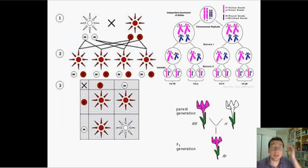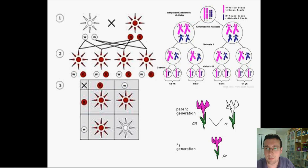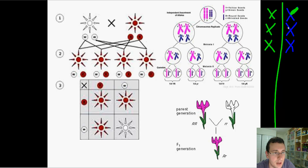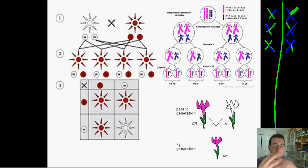Why does independent assortment happen? During meiosis, homologous chromosomes separate during anaphase 1. You have 23 different pairs of chromosomes — one from dad, one from mom. There's also crossing over taking place, so pieces of dad's chromosomes end up in mom's and vice versa, meaning no gamete will be purely one parent's chromosome — they'll be a mixture.